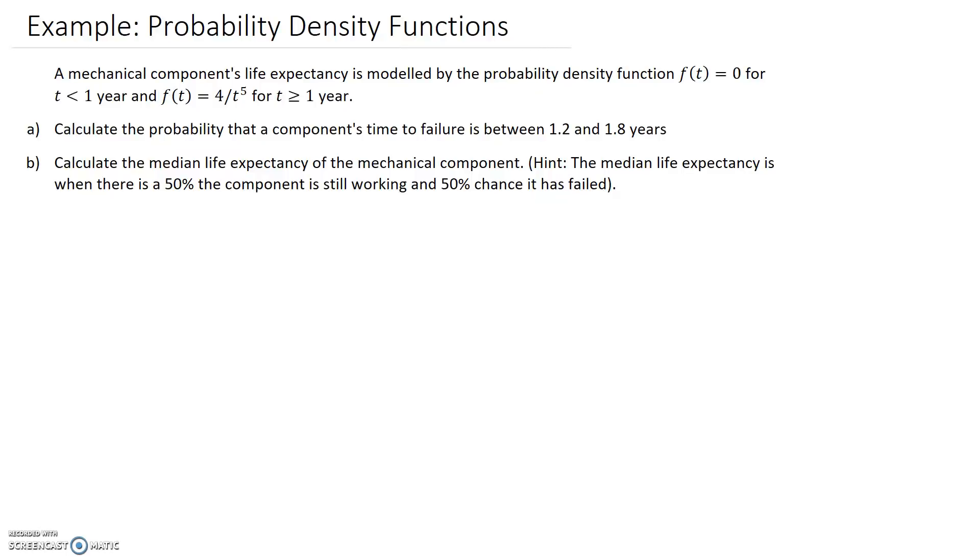A mechanical component's life expectancy is modeled by the probability density function given by f of t equals zero when time is less than one year, and f of t equals four on t to the power of five when t is greater than a year. We're asked to calculate firstly the probability that a component's time to failure is within this range, and secondly we're asked to calculate the median life expectancy of this component.